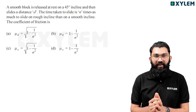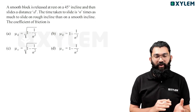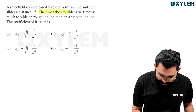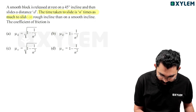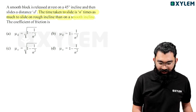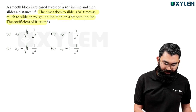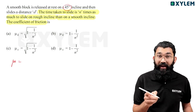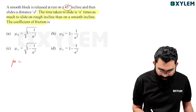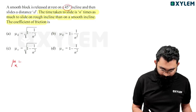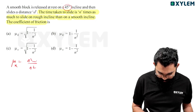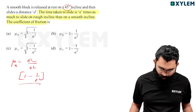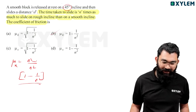In this type of question — a block on smooth surface takes time t, on rough surface takes n times t — we directly apply the formula. Angle is 45°, so tan 45° equals 1. Therefore μ_k equals 1 times (n² minus 1) divided by n², which simplifies to 1 minus 1/n². Option B is the right answer.